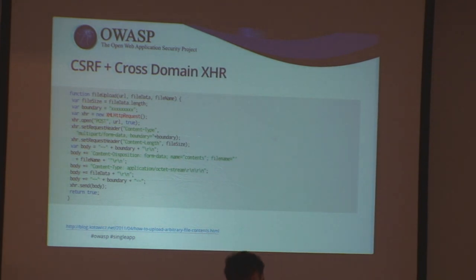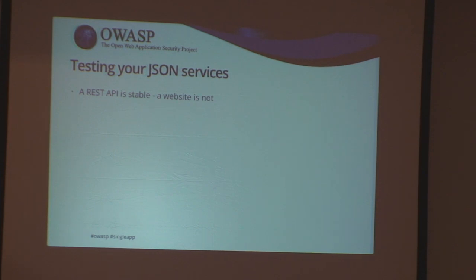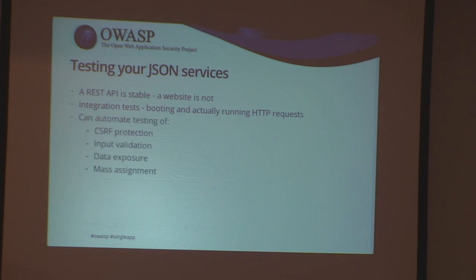Another way is from Koto — basically using JavaScript to build a request and post it to the server. And the interesting bit is that we can test our JSON interfaces. JSON interfaces are supposed to be stable — unlike web tests where the website changes all the time and tests break. If you're testing a JSON API it's supposed to be quite stable, so it's easy to test. You can write real tests that boot up an HTTP server and actually run these requests, testing CSRF protection, input validation, data exposure, mass assignment, etc., to ensure you don't reintroduce problems later.